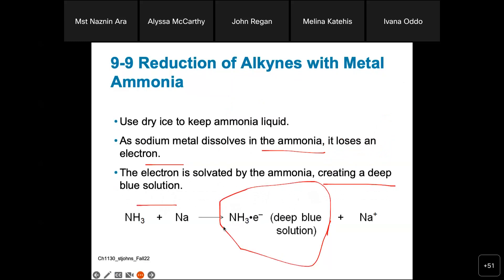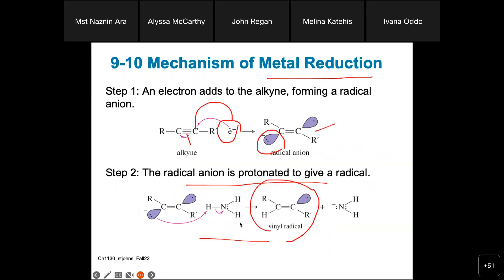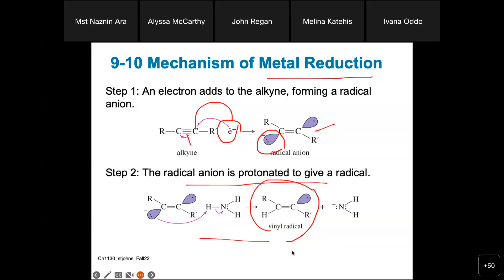Here we have the reduction of alkynes with metal ammonia — this is a specific type of reaction. This is the mechanism of metal reduction. Here, first we get a radical anion — you can see a non-bonding pair of electrons alongside an unpaired electron. Free radicals are always those species which have unpaired electrons, arising mainly by homolytic cleavage. Please try to practice this mechanism.